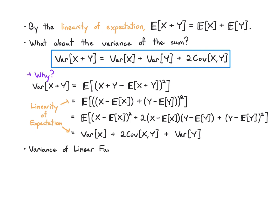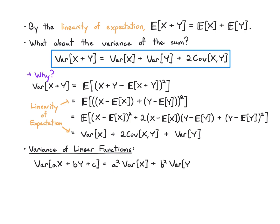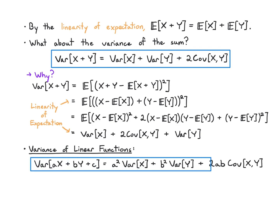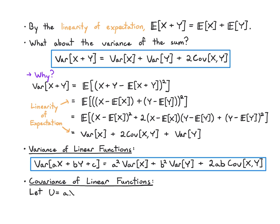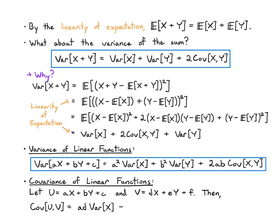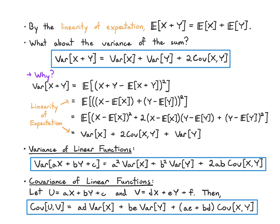We can also show that the variance of a general linear function ax plus by plus c equals a squared times the variance of x, plus b squared times the variance of y, plus 2ab times the covariance of x and y. For the covariance of two linear functions u equals ax plus by plus c and v equals dx plus ey plus f, Cov(u,v) equals ad times Var(x) plus be times Var(y) plus (ae plus bd) times Cov(x,y). These are useful formulas to shortcut calculations.